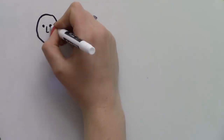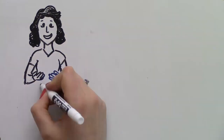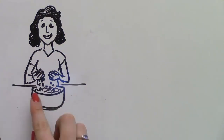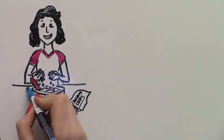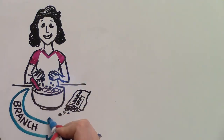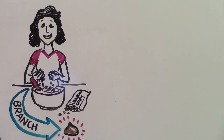Aunt Maria decided to add chocolate chips to her batch of cookies. In software, this departure from the original code is called a branch.